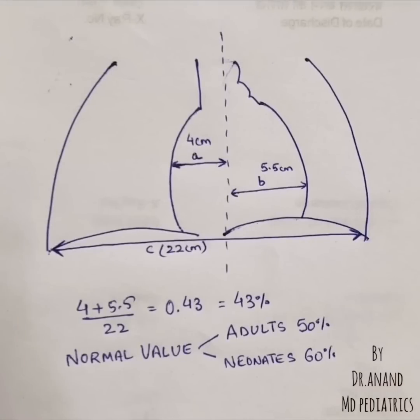You should know the normal values: in adults the CT ratio is 50%, and for the neonate it is 60% — more than that is considered cardiomegaly. You should also know there are various causes for an increased CT ratio due to non-standard radiographic techniques. For example, if the patient has poor inspiration, you can get a falsely increased CT ratio. Similarly, in the supine and prone positions you will also get an increased CT ratio.